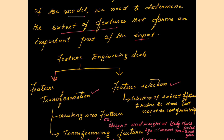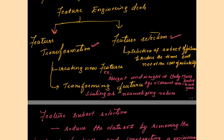So feature engineering can be dealt with feature transformation and feature selection. Now for feature transformation, there are two possibilities: you can create new features, and you can transform existing features.